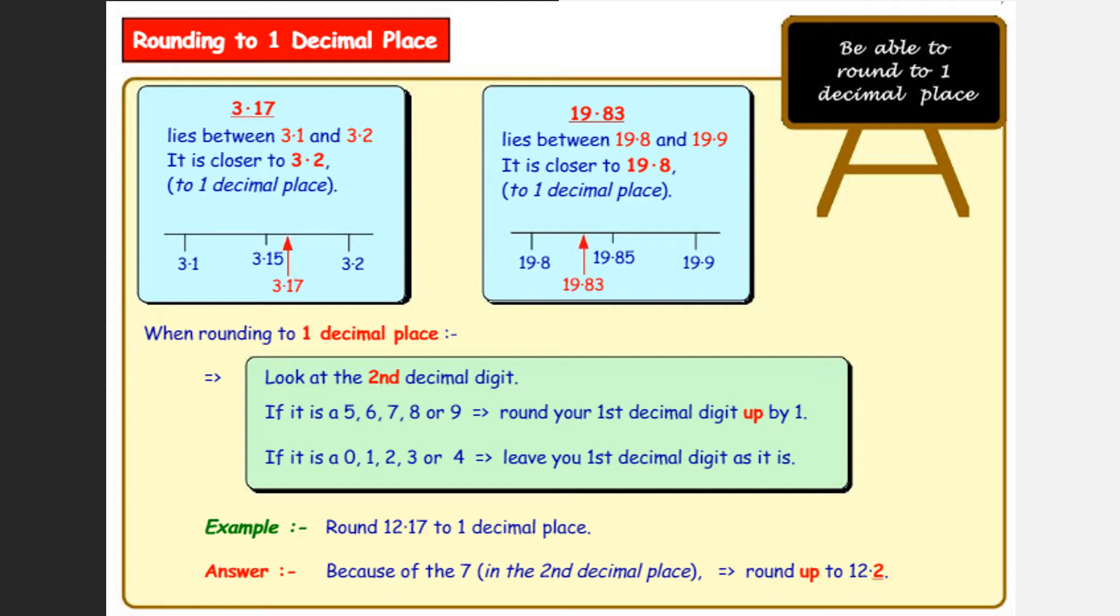In 19.83, it's the three that matters. It's in the second decimal place and that tells us to round down. So in the second decimal place, if we've got 5, 6, 7, 8, or 9, then we're rounding up, or 0, 1, 2, 3, 4, we're rounding down. So the example here, round 12.17 to one decimal place. Because of the seven, we would round up and it would be 12.2.